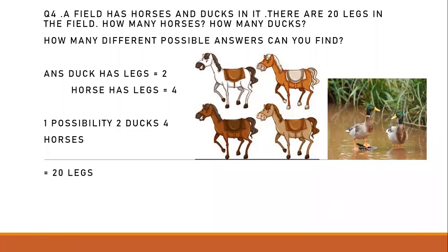First possibility: two ducks. Two ducks have four legs — out of twenty, four legs are assigned to ducks, so sixteen legs remain. How many horses can we take with sixteen legs? Four horses, because each horse has four legs and four horses have sixteen legs. Counting all legs together: one through twenty — this is the first possibility.